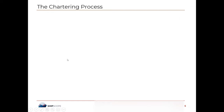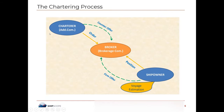So how the whole chartering process looks like can be summarized in this whole picture. There are three main players — as studied in lecture one: there is the charterer, the broker, and the ship owner. The broker is the one who is providing liquidity to the market; he's the middleman between these two.